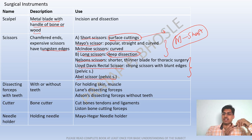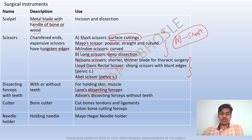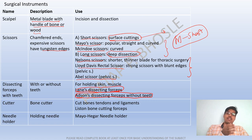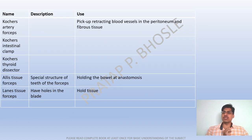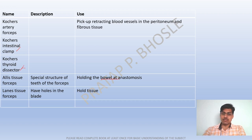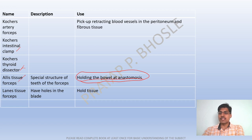Dissecting forceps are with or without teeth, used for holding skin and muscle. Lanes dissecting forceps have teeth; Addison dissecting forceps are without teeth. Cutters are used to cut bones. The needle holder is used for holding the needle — the Mayoheegar needle holder is the key type. Tissue forceps, such as Lanes tissue forceps, are used to hold tissue.